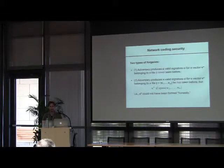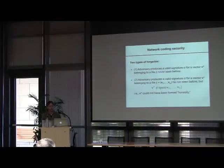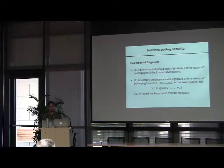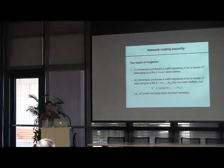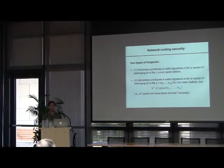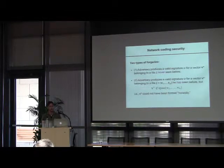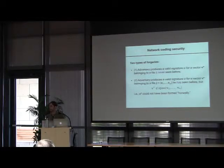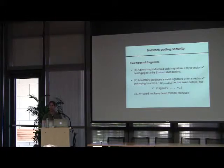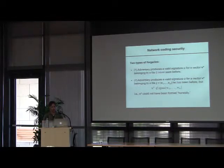What does it mean for the system to be secure? There are two ways to break the system — two ways to produce a forged signature. One is to produce a signature for some vector the adversary has never seen before, similar to an ordinary public-key signature scheme where forgery is a valid signature on a previously unseen message. The more interesting type of forgery is a valid signature that belongs to a file we have seen before, but where this vector is not in the span of the vectors that define this file. So the signature scheme can authenticate anything in the span of v1 through vm, and the security property is that we can't easily authenticate anything outside of this span.